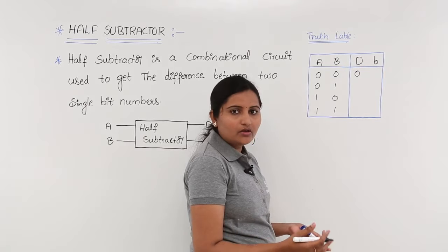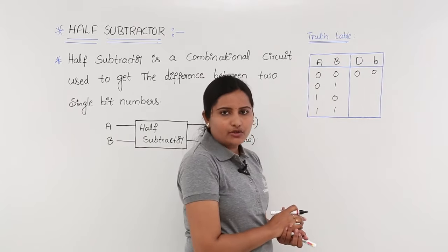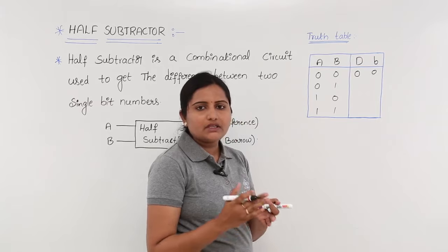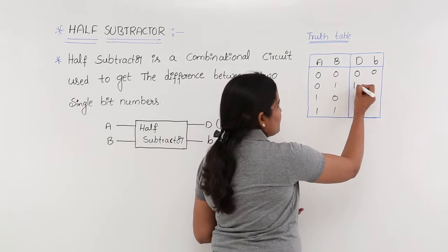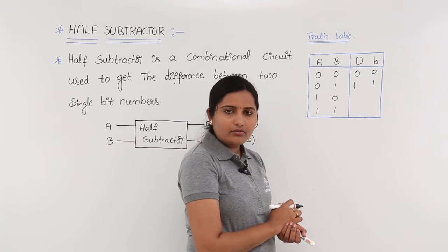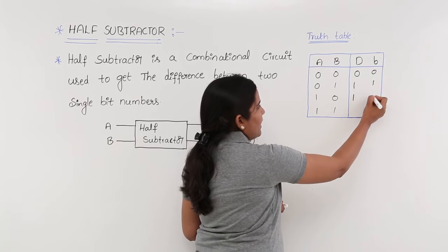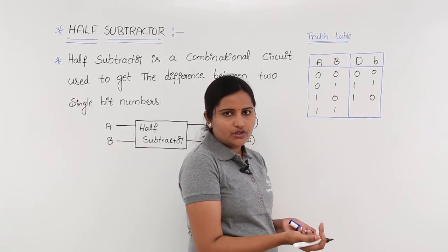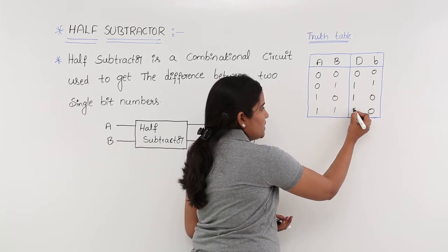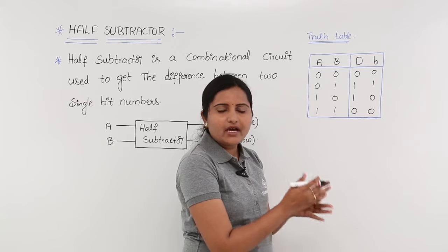For 0 minus 1, since there is no borrow coming in, we put 0 in the borrow place. But 0 minus 1 by normal subtraction rules gives 1 with borrow 1, so difference is 1 and borrow is 1. For 1 minus 0, the result is 1 with no borrow. For 1 minus 1, the difference is 0 and there is no borrow either.